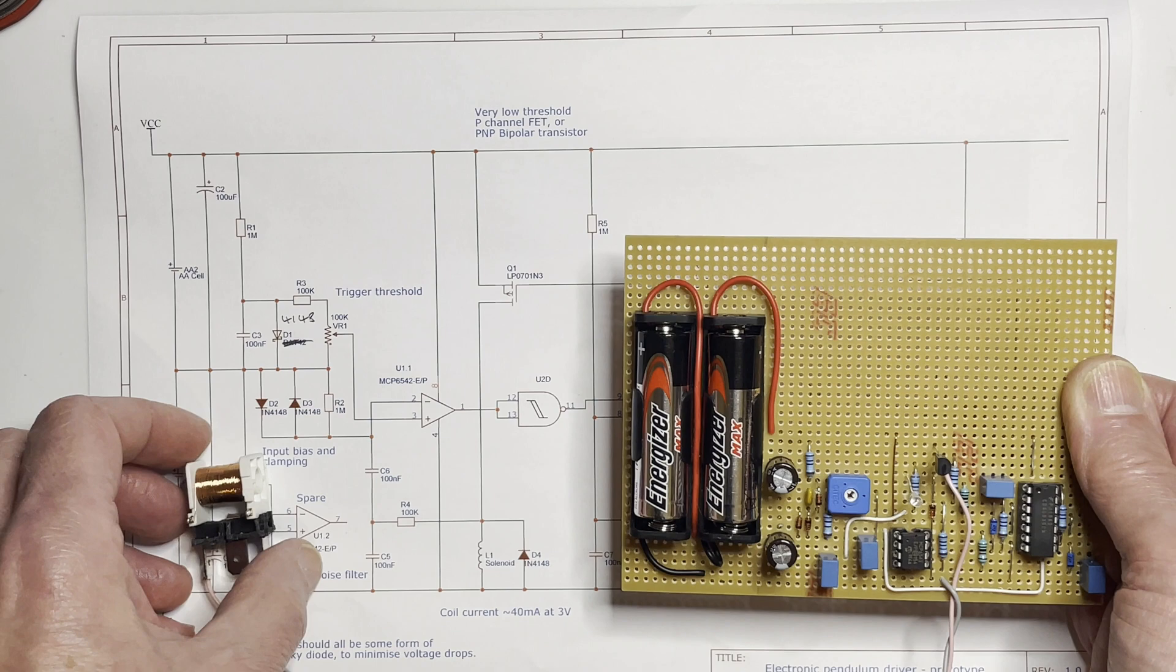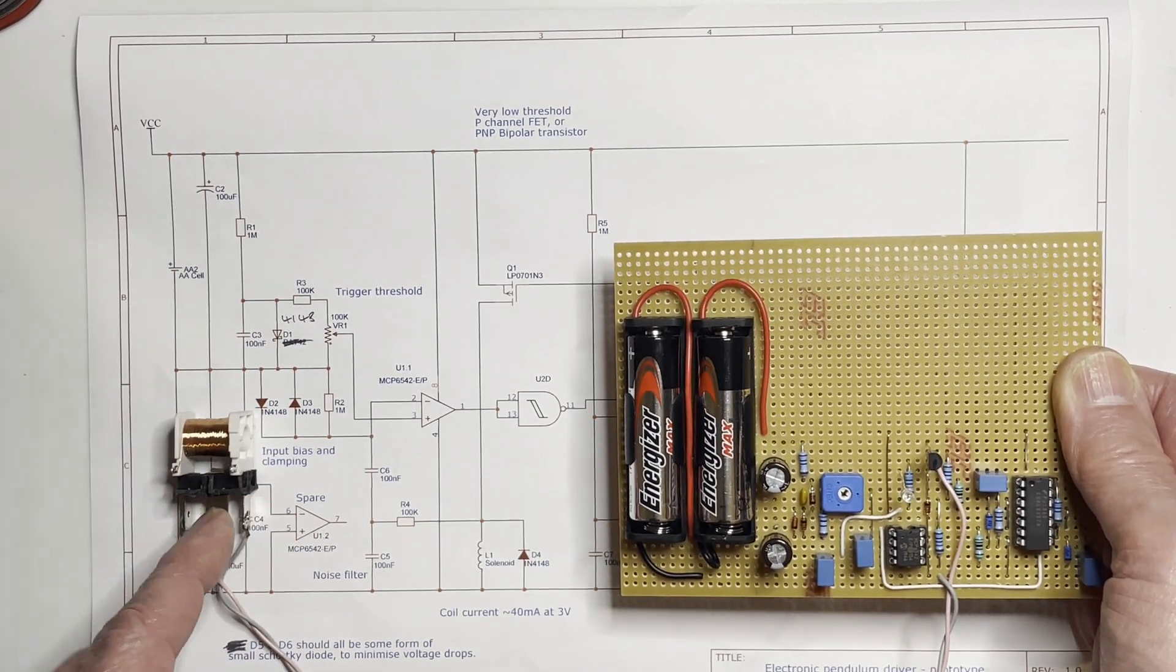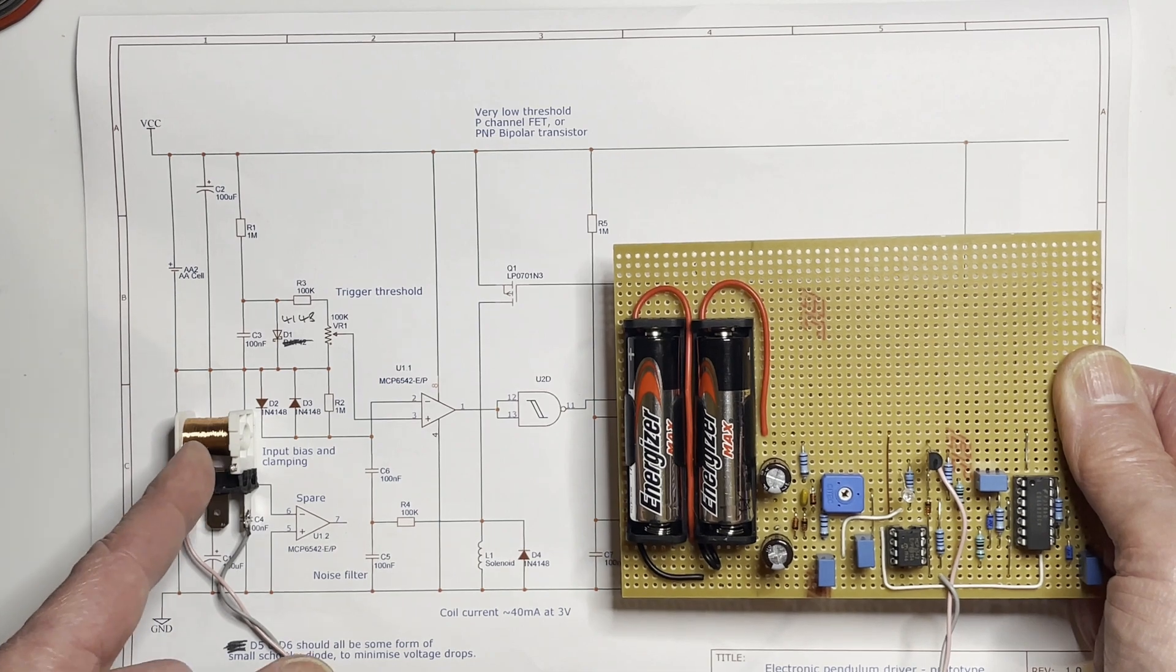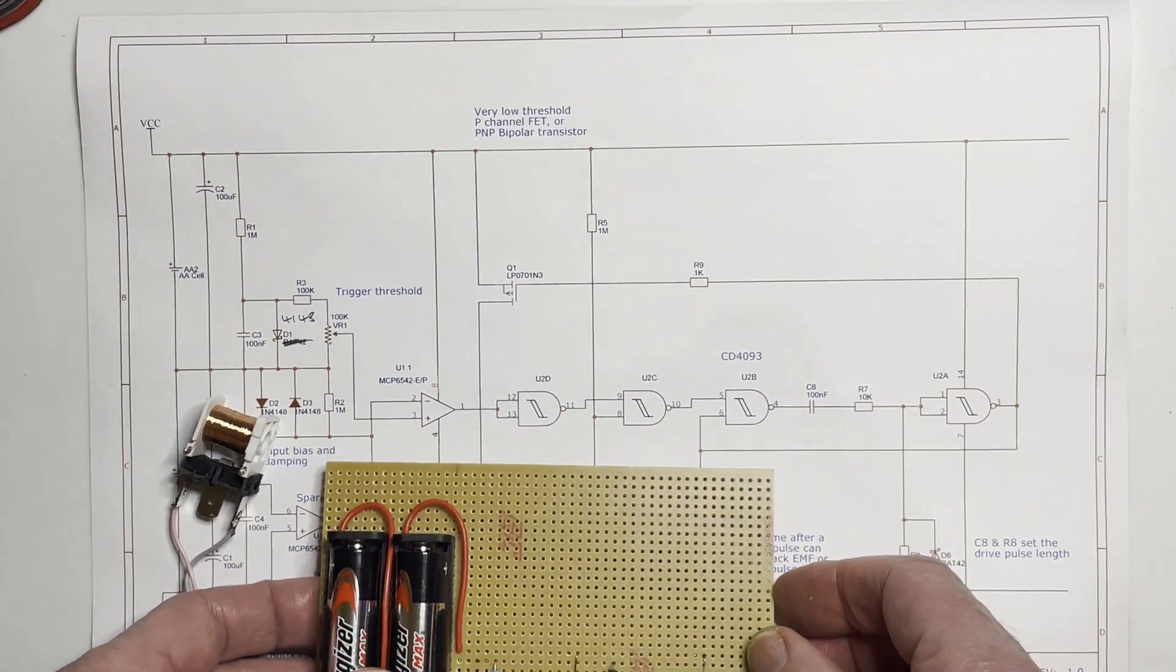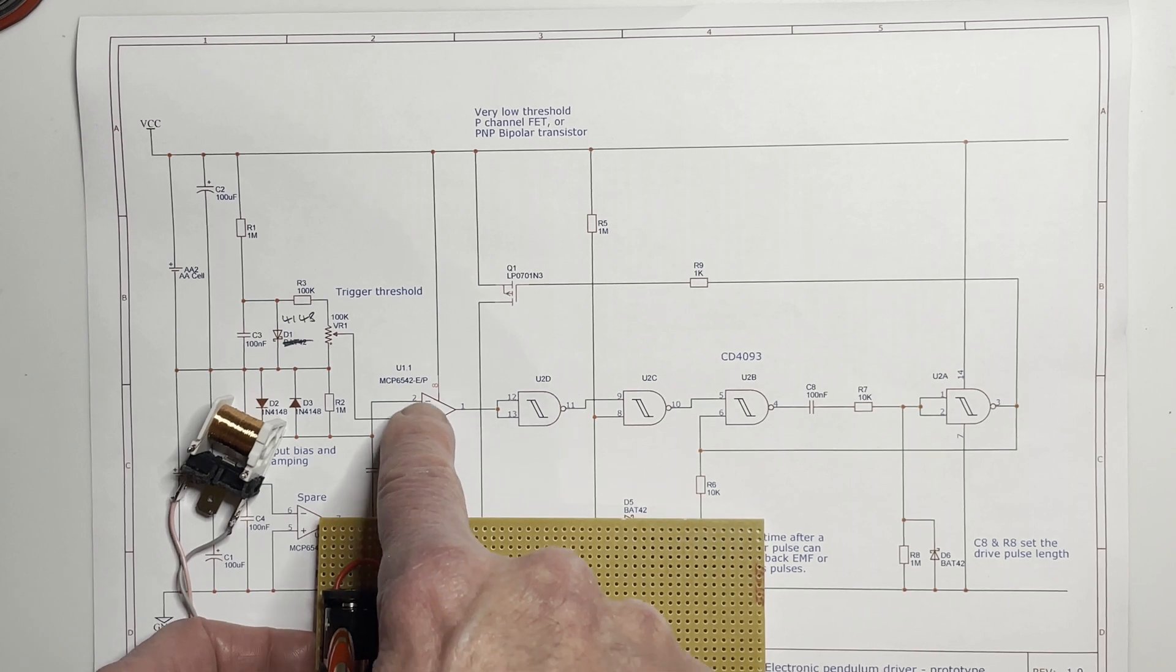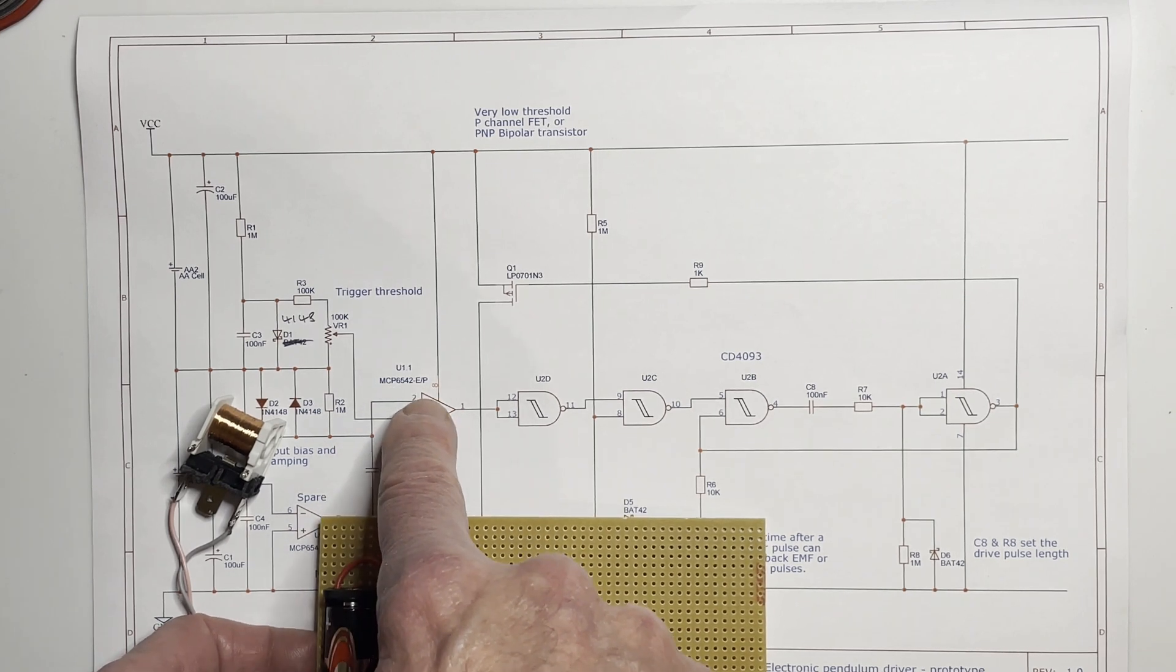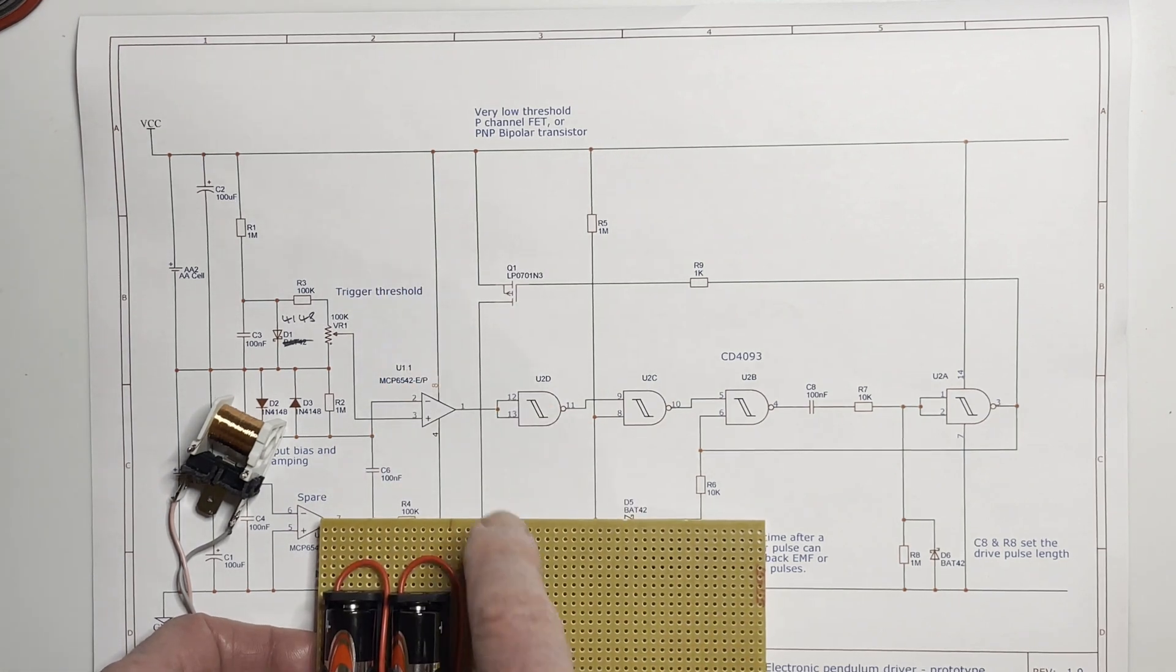So that's doing the same as the mechanical contact switch on the original pendulum. It's providing a timing signal that shows the pendulum is past center in the coil, so when to give it a push. Then the rest of the circuit does the pushing if you like. That's a CMOS comparator that's rail to rail input and output. That's only a slightly special part really. It needs to be a very low power one to operate on three volts without flattening the batteries.